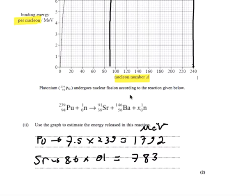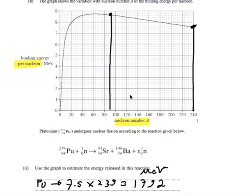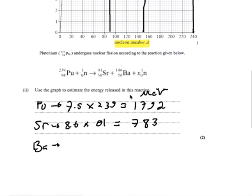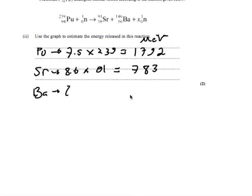Finally, we have barium. Looking at the chart, barium has 146 nucleons. Taking that up to the top of the chart, I read about 8.2 MeV per nucleon. With 146 nucleons, that results in a total of 1,197 MeV.